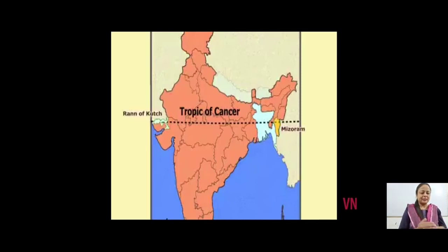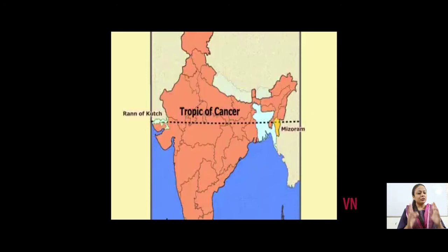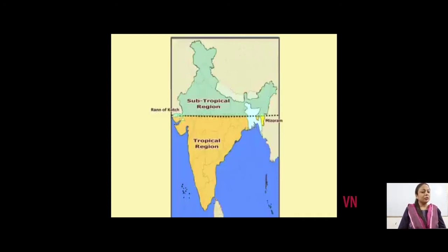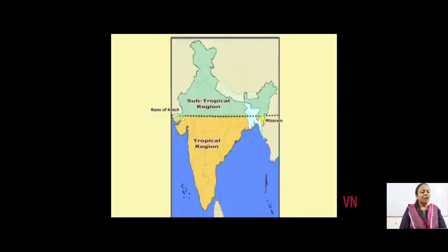As the Tropic of Cancer passes from the centre of the country, it has divided the country into two different heat zones. The northern and southern parts of the country lie in two different heat zones. This map further makes it clear that the northern half experiences subtropical climate whereas the southern portion experiences tropical climate because it is near the equator. The southern tip of India starts from 8 degrees 4 minutes north latitude, so the equator is very close to the southern part of the country. Therefore, from the Tropic of Cancer to the southern tip, the country lies in the torrid or tropical zone.